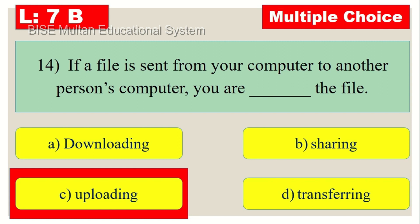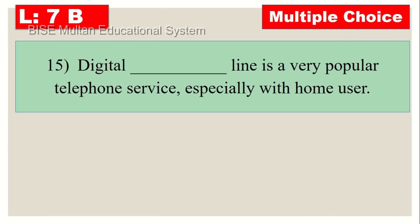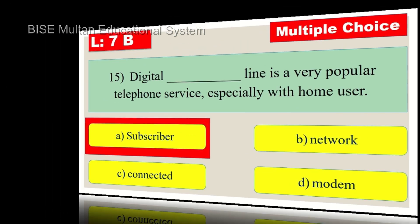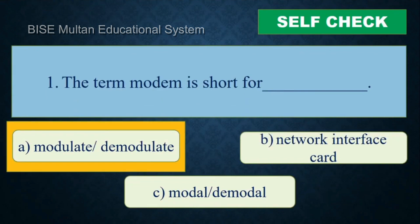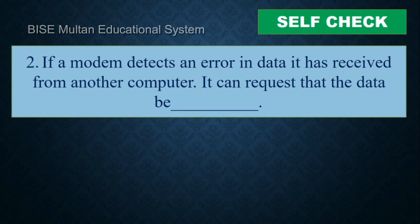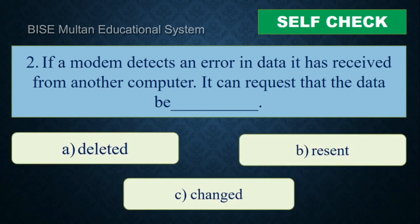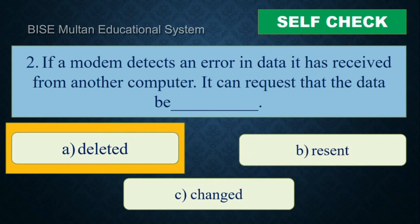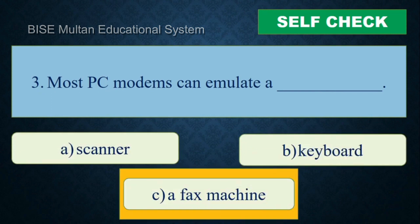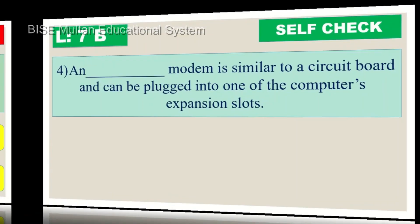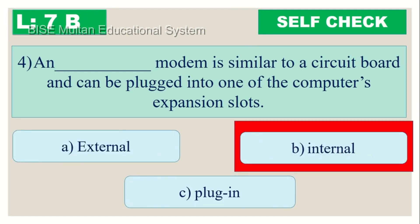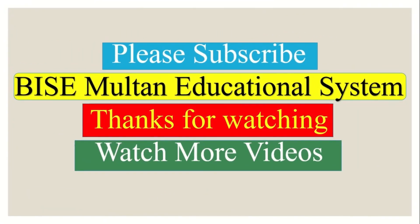Question number 15: Digital dash line is a very popular telephone service, especially with home users. The answer is subscriber. Self Check Question 1: The term modem is short for modulate and demodulate. Question 2: If a modem detects an error in data received, it can request that the data be resent. Question 3: Most PC modems can emulate a fax machine. Question 4: An internal modem is similar to a circuit board and can be plugged into one of the computer's expansion slots. Please subscribe to our small town education system. Thanks for watching. Allah Hafiz.